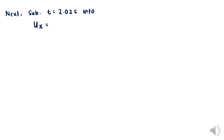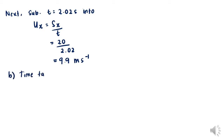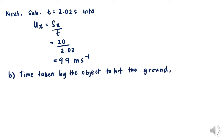Substituting t equals 2.02 seconds into ux equals sx over t, we get ux equals 9.9 meters per second. This is the initial speed. Next, part b asks for the time taken by the object to hit the ground.